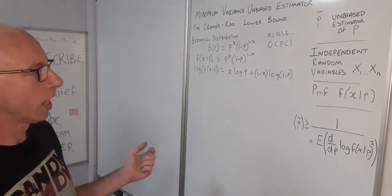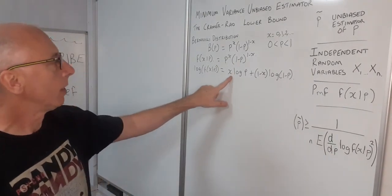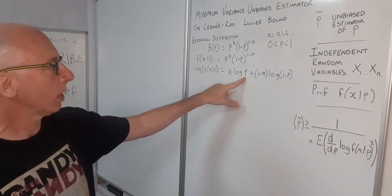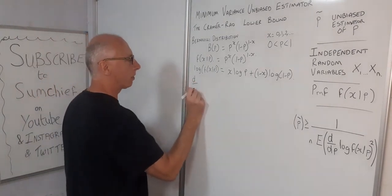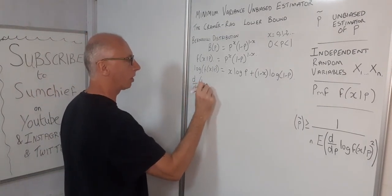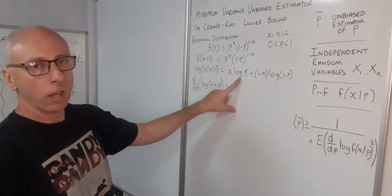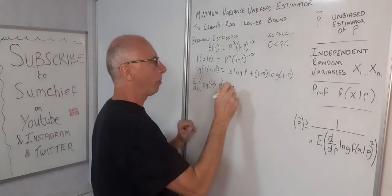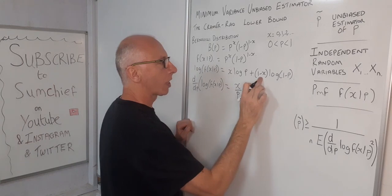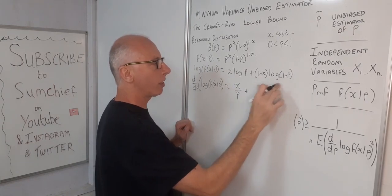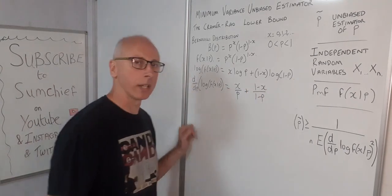Now we take the derivative with respect to the parameter P. The derivative of log of P is 1 over P, so differentiating X times log of P gives us X over P. Then adding the derivative of 1 minus X times log of 1 minus P: the derivative of log(1-P) gives 1 minus P in the denominator, with 1 minus X in the numerator.